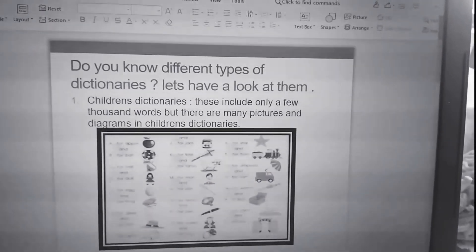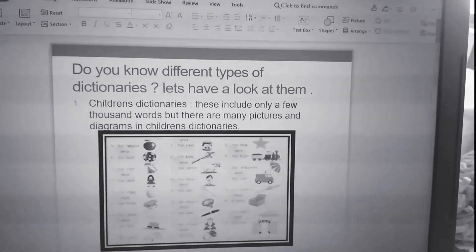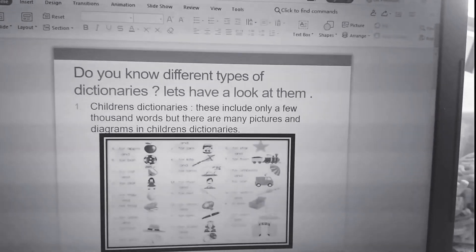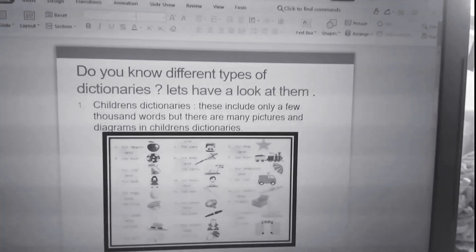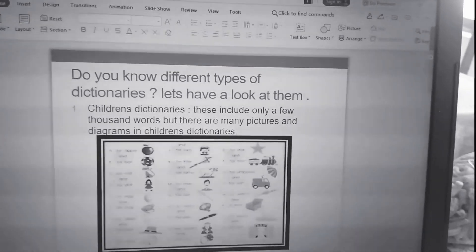Do you know the different types of dictionary? Let us have a look at them. Now the first one is the children's dictionary. This includes only a few thousand words, but there are many pictures and diagrams in children's dictionaries.